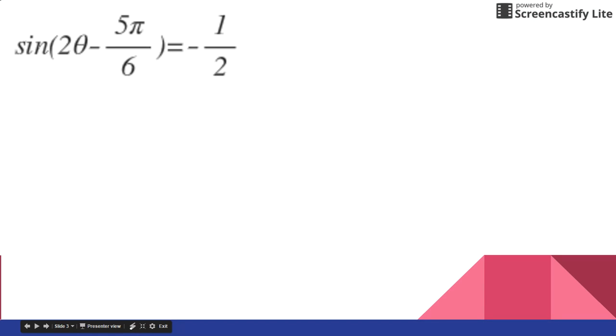So the first thing you want to do is imagine that you're solving sine of x equals negative 1 half. When the sine equals negative 1 half, that would be at 7π over 6 and 11π over 6. And then we're just going to imagine solving this equation.